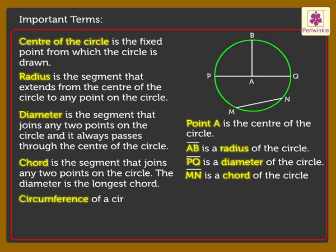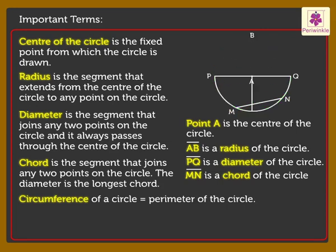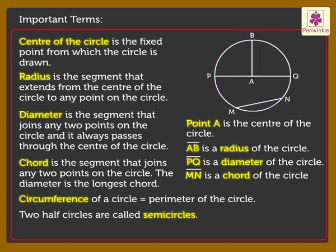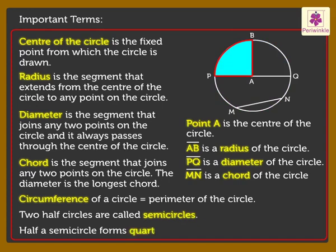The circumference of a circle is the perimeter of the circle. When we fold circle along the diameter, we get two half circles. They are called semicircles. And lastly, half a semicircle forms quarter of a circle.